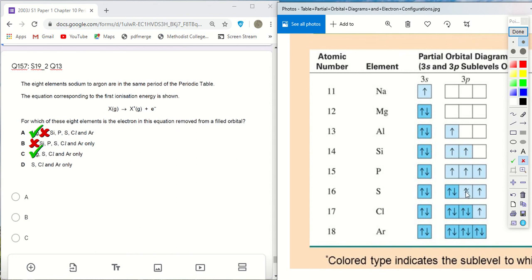So sulfur, the first electron removed will be this one, right? This electron, and it is from a filled orbital. So sulfur is one of the answers.